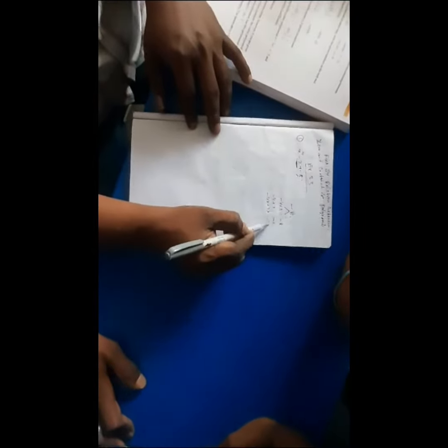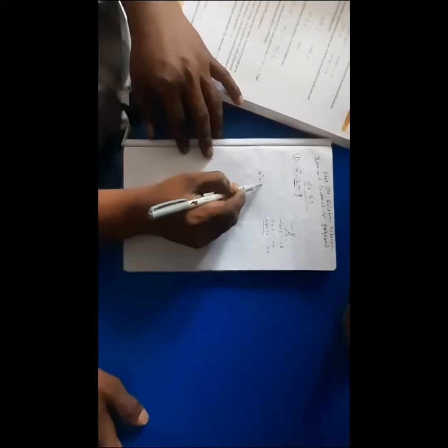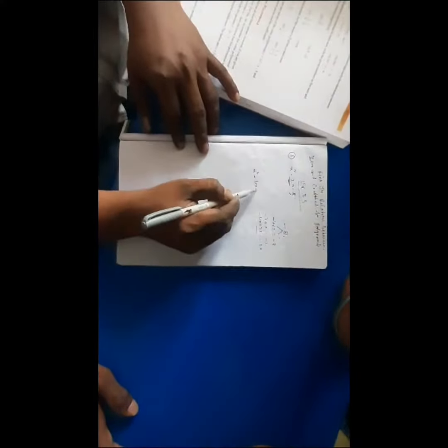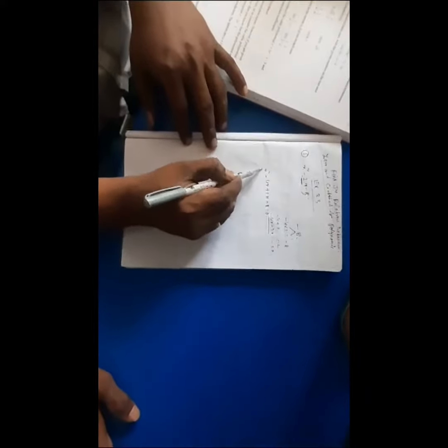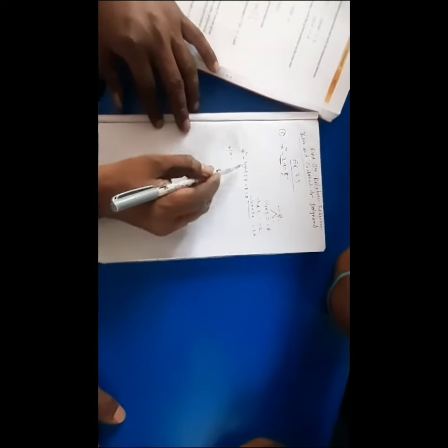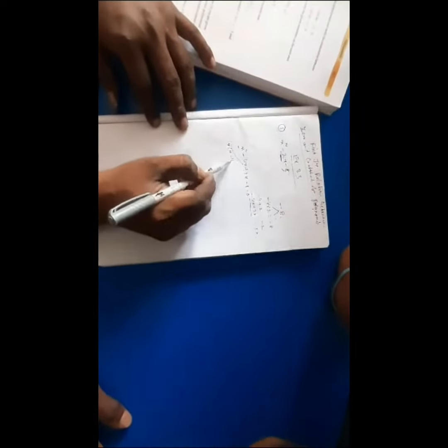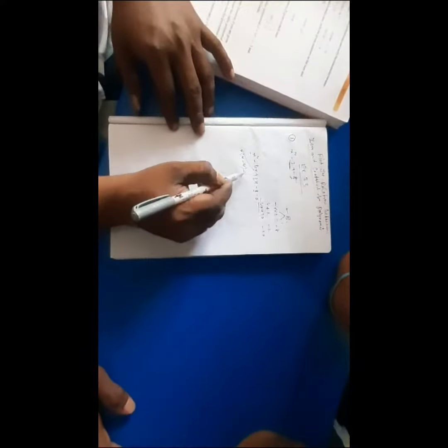This is the substitution: x squared minus 4x plus 2x minus 8 equals 0. Setting this equal to zero, x is equal to... x is equal to minus 4, x is equal to...